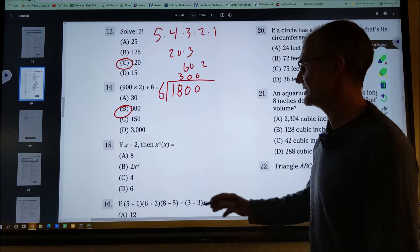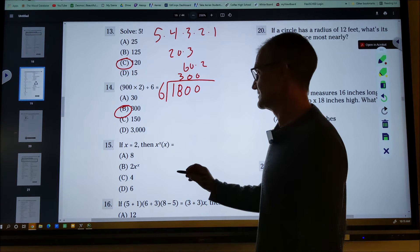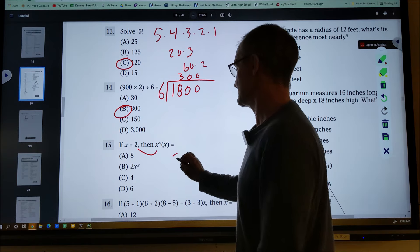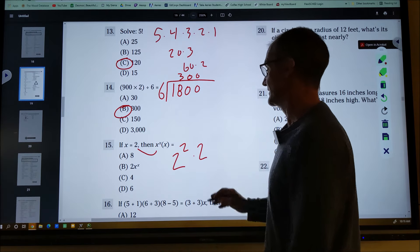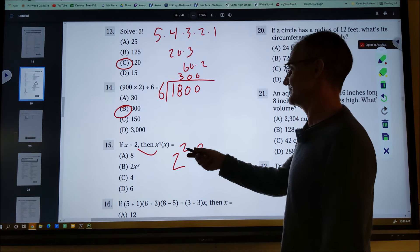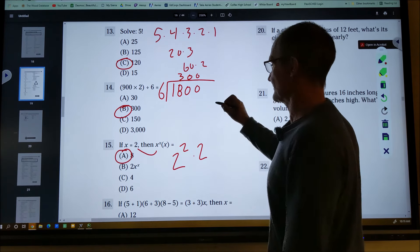And then 15 here, if x is equal to two, you have to take that two and plug it in and know your order of operations as well. So I'm going to plug two in for x to get two to the power of two times two. Exponents before multiplication. So I have four times two or eight.